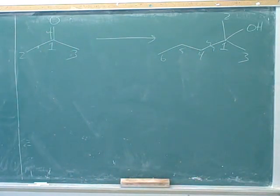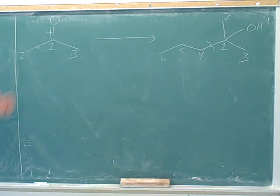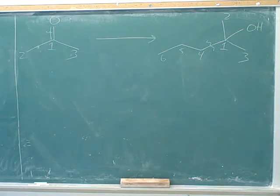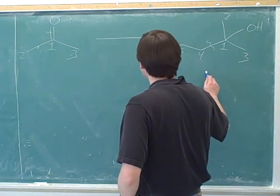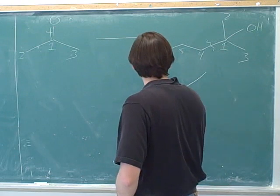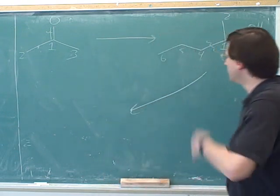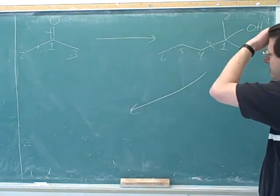Why is it so interesting when we form a carbon-carbon bond? Because we only know kind of one way to do that. So with a Grignard — it has a ketone, right? So we're going to use a Grignard. The hard part is to come up with the right Grignard.